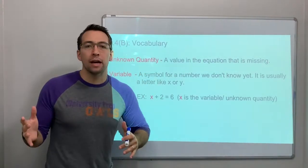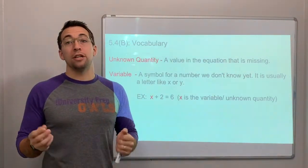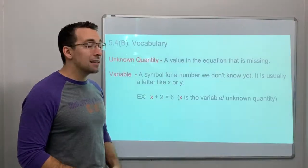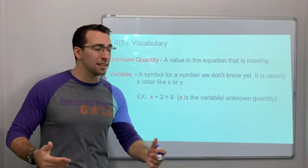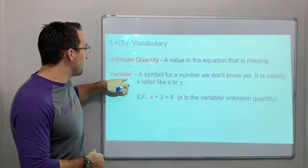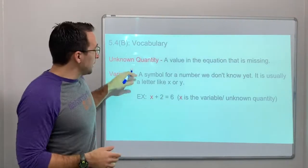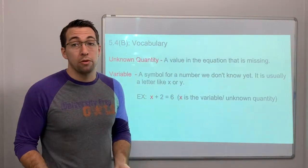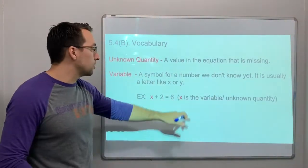So an unknown quantity is a value in the equation that is missing. It's going to be represented a lot of times as x, sometimes it's p or n or a letter. It represents a missing number. And then a variable, similar to an unknown quantity, is a symbol for a number we don't know yet. It's usually like the letter x or y.